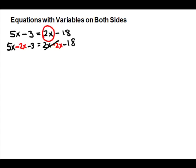That cancels on the right-hand side, and on the left-hand side 5x minus 2x gives us 3x — a standard two-step equation. Go to the side with the variable and take off anything added or subtracted. We're going to take off the minus 3, so we will add 3 to both sides.